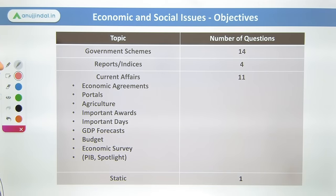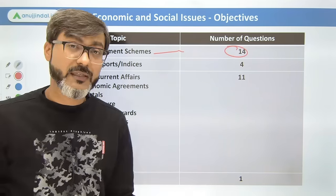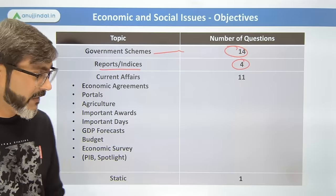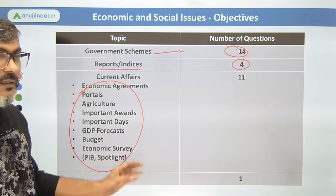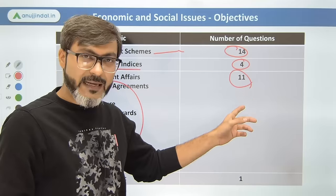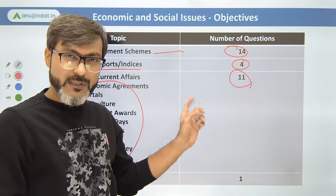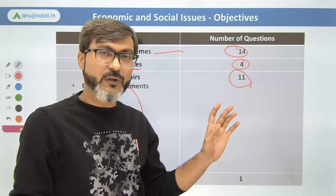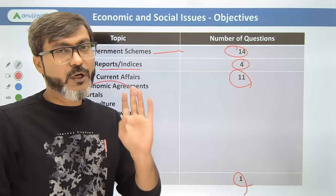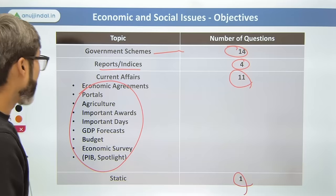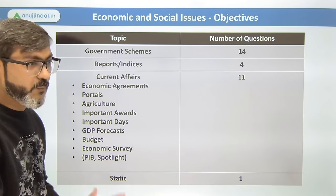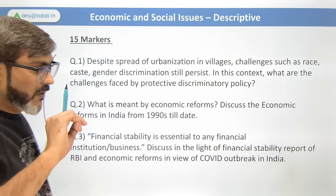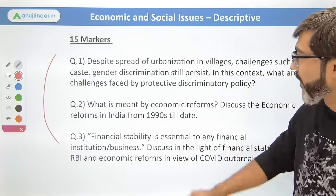For 2022, in ESI objective, government schemes again had 14 questions — around 50% of the paper. Reports and indices had four questions. Current affairs from PIB increased from 8-9 questions in 2021 to 11 questions in 2022. Static questions came down to just one. You can see how preparation strategy must be shaped — current affairs and schemes are dominant.